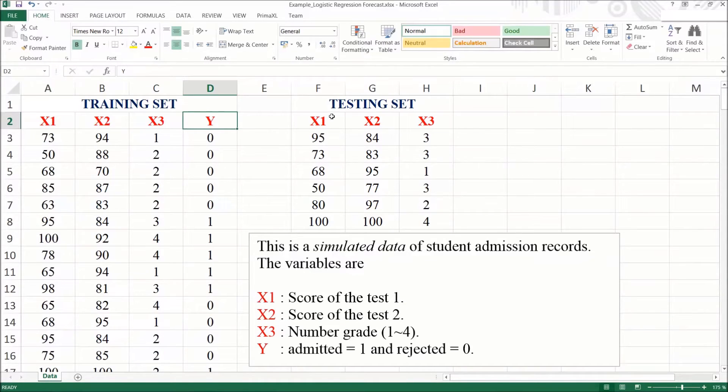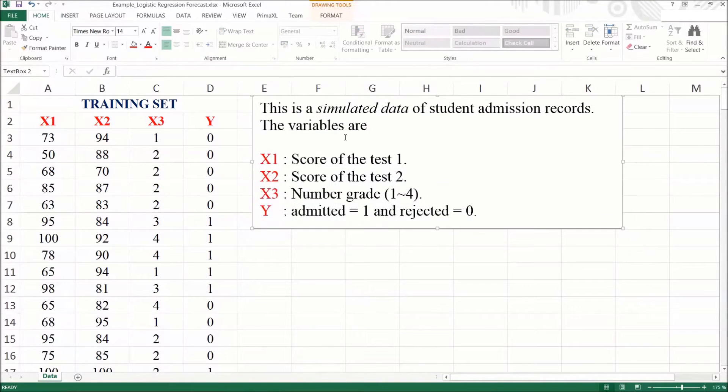We have the testing set with the independent variables x1, x2, and x3, which are in fact the x primes. There is no dependent variable y prime. This is a simulated data of student admission records. The variables have the meanings as shown here. We have seen this data in the previous episode, the part 1 of the logistic regression.